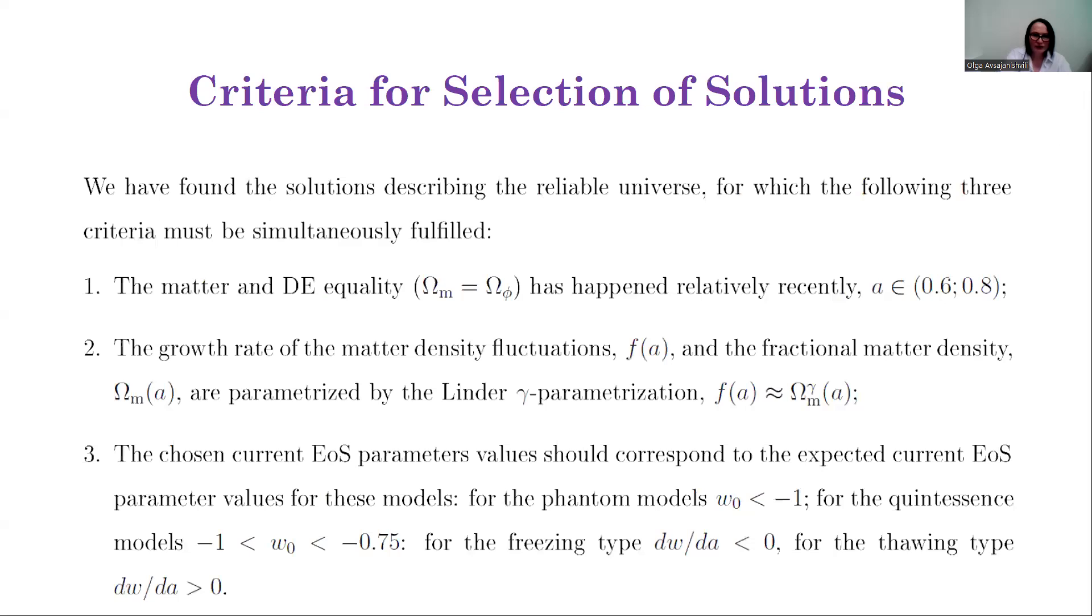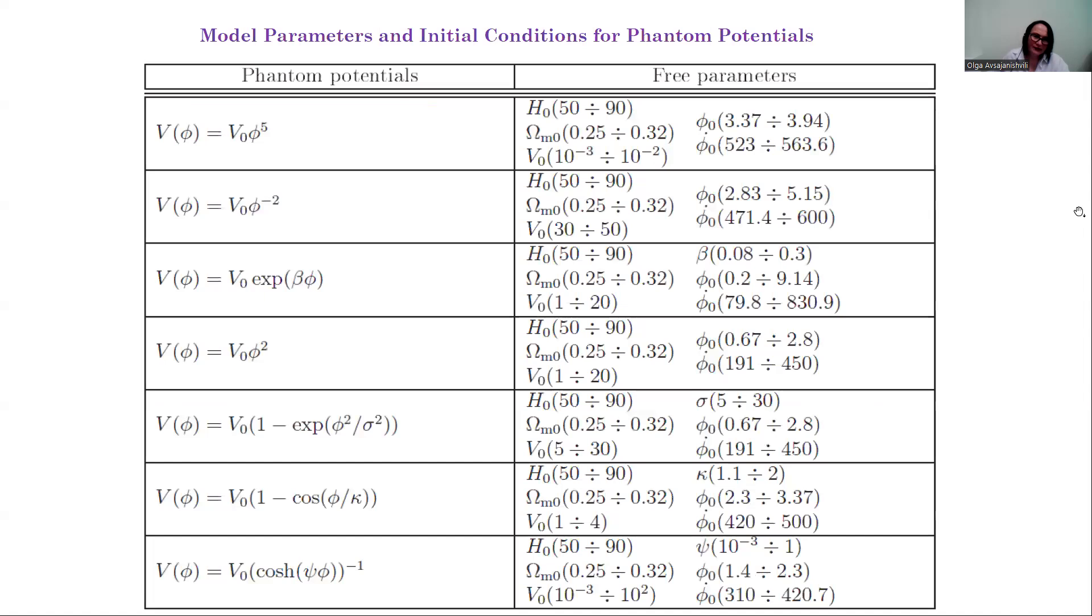Among numerous solutions, we found solutions describing the real universe, values for which the following three criteria must be simultaneously fulfilled: the moment of the matter and dark energy equality happened relatively recently; the growth rate and the fractional matter density are parametrized by the linear γ parametrization; the chosen current equation of state parameter values should correspond to the expected current equation of state parameter values for these models. As a result, we obtained ranges of the initial conditions and model parameters which bring to such solutions.